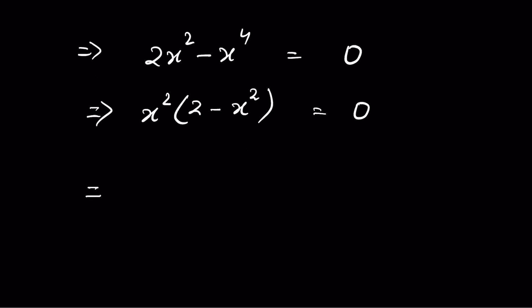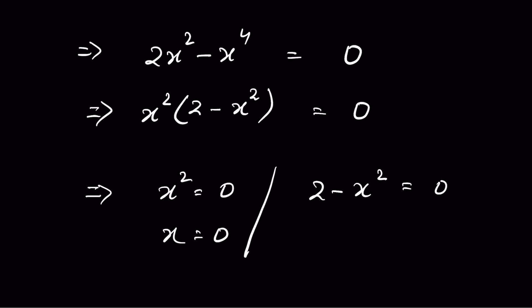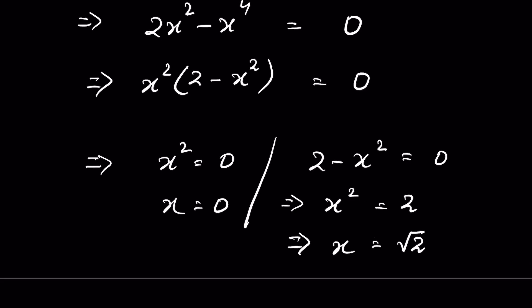Now we have two solutions. When x² = 0, then x = 0. When 2 − x² = 0, we get x² = 2, because sending −x² to the right-hand side makes it positive. To remove the square, we take the square root of both sides, giving x = √2.